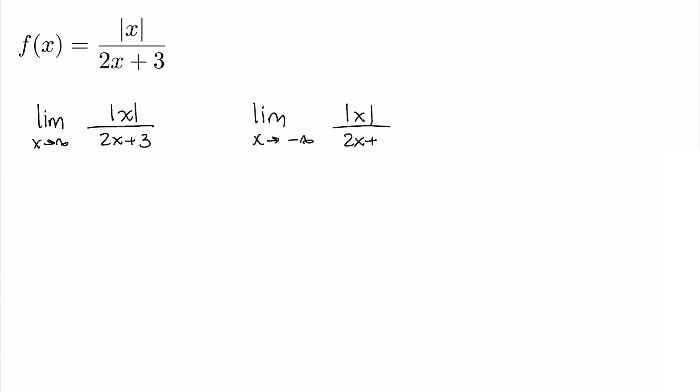The rational functions we've dealt with in the past usually have the same horizontal asymptote on both sides. This isn't exactly a rational function because of the absolute value in the numerator.